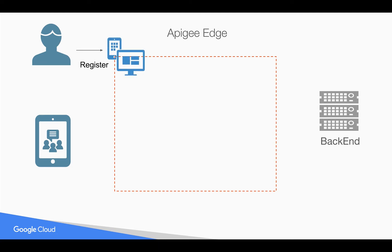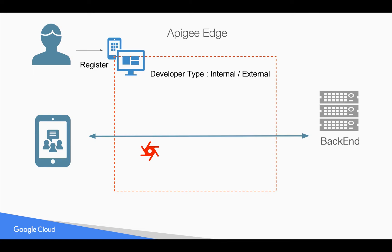Whenever this developer or partner registers in the Apigee Edge Drupal-based developer portal, you would like to collect some information about the developer and use that information at API runtime to take an action. For example, you might collect a developer type — whether it is internal or external — and based on that, take an action whenever an API call goes through Apigee Edge. You would retrieve this attribute at runtime and take action based on it.